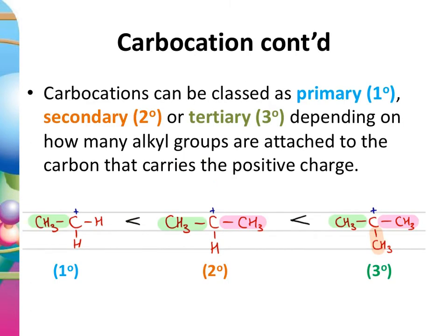We've looked at the classification of primary, secondary, and tertiary before — when we did the lesson on haloalkanes. We're also going to classify alcohols as primary, secondary, and tertiary. In all three cases, primary, secondary, and tertiary refers to how many carbons or alkyl groups are attached to the thing we're interested in.